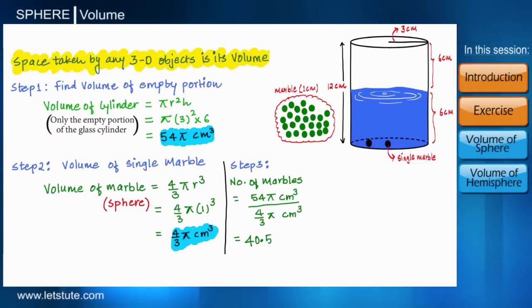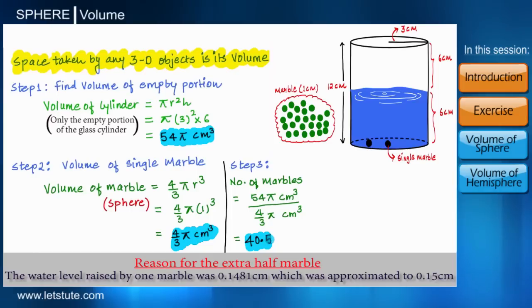That means it actually needs 40.5 marbles, or you can say that we need 40 and a half marble. So we are getting an almost equal answer. So guys, this was the logic about rising water level, and whenever there is logic, there is mathematics. Let's move forward and see how we have got the formula 4/3 πr³ to calculate volume of a sphere as mentioned above.